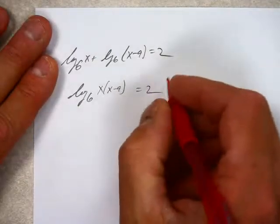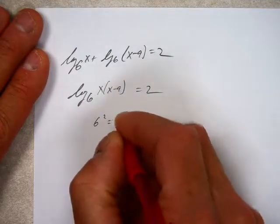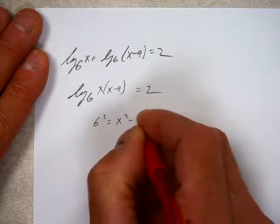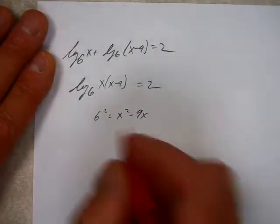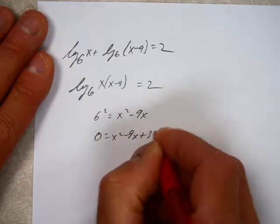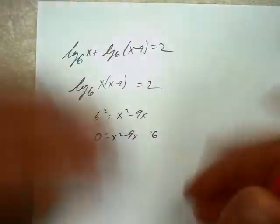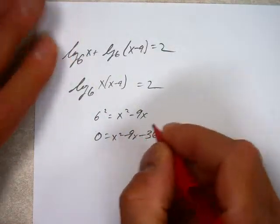So what to the what equals what? 6 squared. Good. So now we've got a situation we can solve really quite nicely. 6 squared equals x squared minus 9x. 36—no, it should be minus 36, shouldn't it? I'm going to move it over. Now we've just got to pick a way of factoring it.